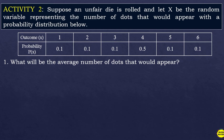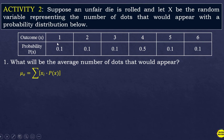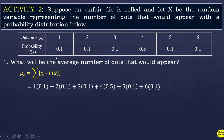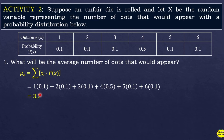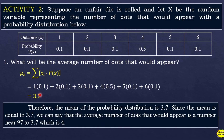For number one: what will be the average number of dots that would appear? Since we are finding the average, we use formula one — multiply each value of the random variable by its corresponding probability, then get the summation. So: 1×0.1 + 2×0.1 + 3×0.1 + 4×0.5 + 5×0.1 + 6×0.1. You can use your scientific calculator to compute this. The answer is 3.7.